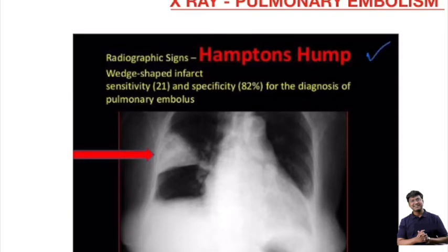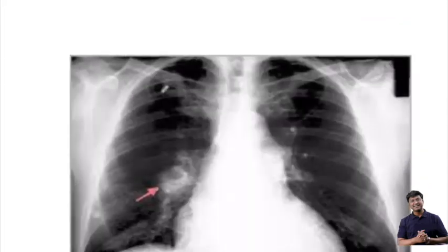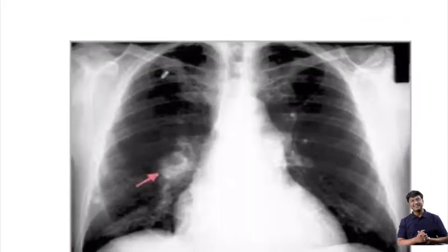One of the very important signs is Hampton's Hump. What is Hampton's Hump? It is the presence of a wedge-shaped infarct, and this wedge-shaped infarct will be present distal to the embolus.